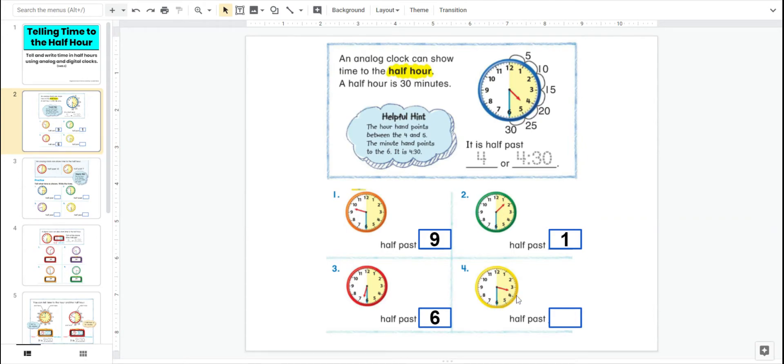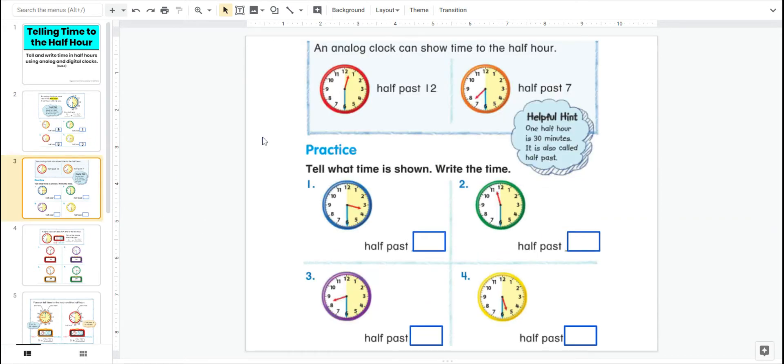What time is it? Good. Three. Half past three. So 9:30, 1:30, 6:30, 3:30. That's the other way you can say it. Let's keep going, practicing that.